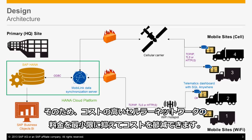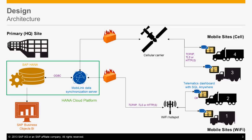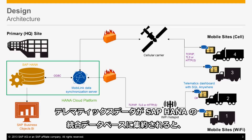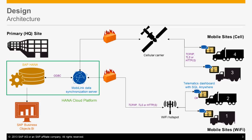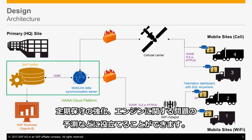Within the corporate site, the company would be able to run an on-premise instance of SAP HANA or have an on-demand instance running inside the SAP HANA Cloud Platform. Once the telematics data is aggregated to the consolidated SAP HANA database, the company can build analytic reports and perform data processing operations. The statistics and metrics found in the telematics data can help companies enhance productivity, monitor vehicle safety, improve scheduled maintenance, predict possible engine problems, and a lot more.